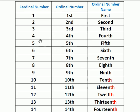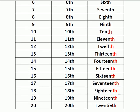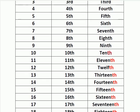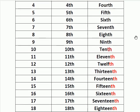From number 4 onwards, the ordinal number follows the same pattern — we get the ordinal number by adding 'th' after the given number. So: 4, 4th; 5, 5th; 6, 6th; 7, 7th; 8, 8th — same pattern up to 20, 20th. From number 4 onwards, we get the ordinal number by adding 'th' after the given number.